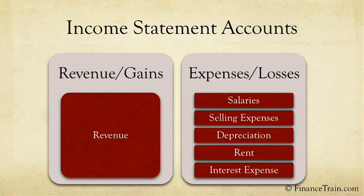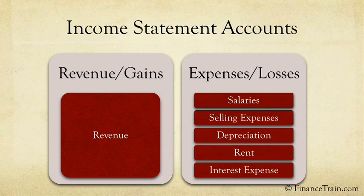The two income statement accounts are shown on screen. Within the revenue account, there is one main account for revenue where the company's primary revenue is recorded. Apart from that, there can be other accounts for items such as dividend and interest earned, money earned from sale of assets, capital gains, etc.